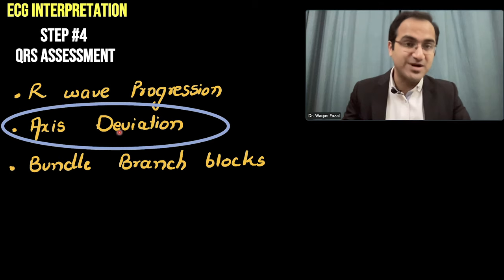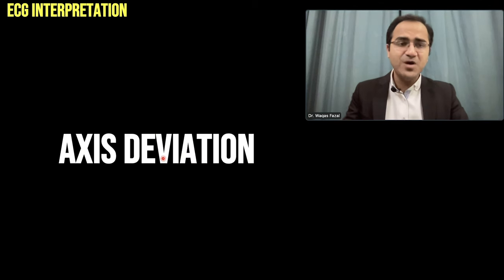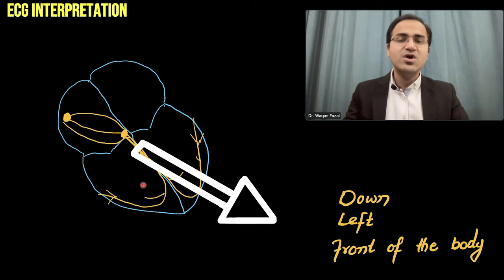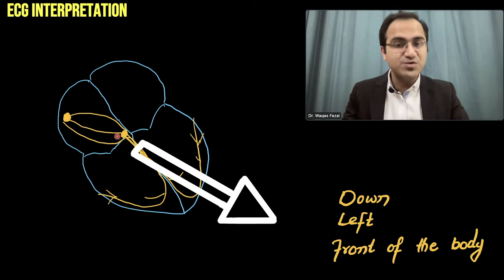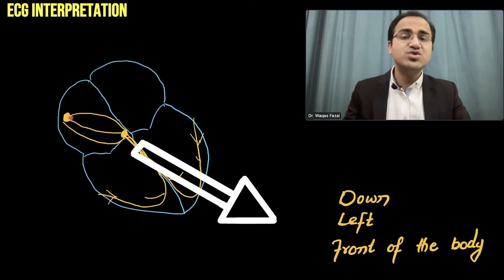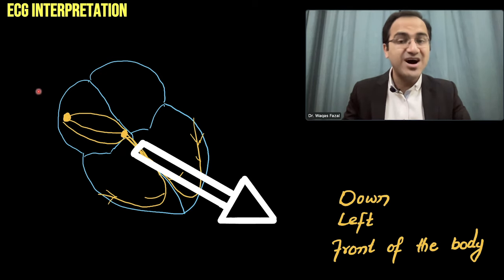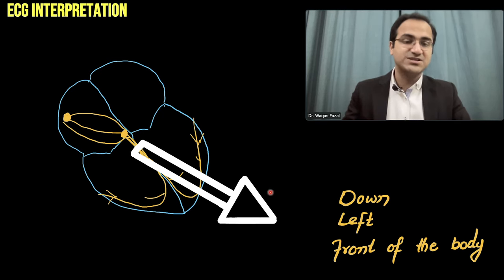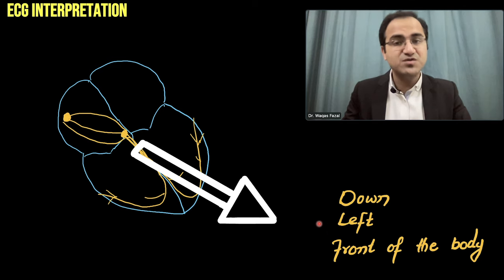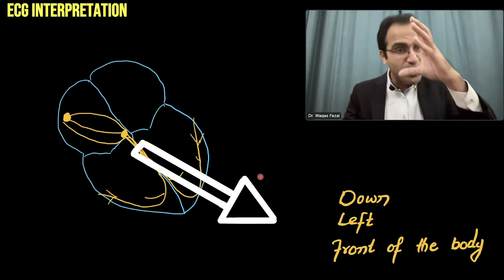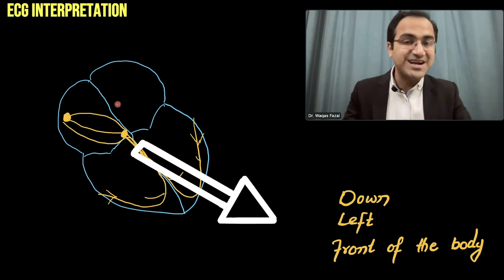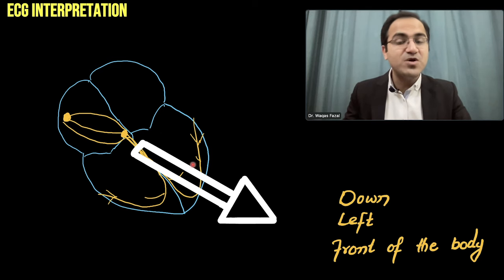Coming to axis deviation: whenever normal current flows through the heart, it flows from the SA node to the AV node, and from the AV node to the bundle of His to the Purkinje fibers. The flow of this current in the heart is in the direction of left lateral downward — down, left, and toward the front of the body. That is the normal flow of electrical current in the heart.